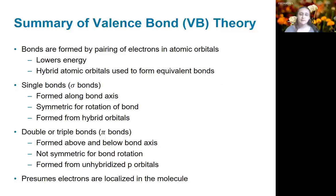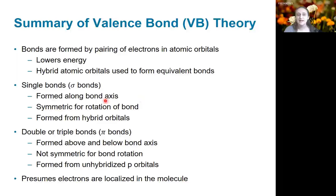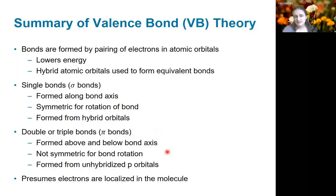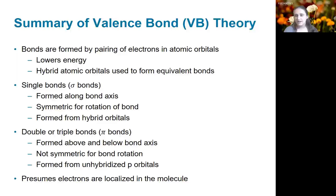To summarize: bonds are formed by the pairing of electrons in atomic orbitals, forming a molecular orbital at lower energy. We use hybrid atomic orbitals to explain why we get equivalent bonds. We have two different types of bonds: sigma bonds, which are single bonds that form along the bonding axis, can rotate freely, and are generally formed using hybrid orbitals; and pi bonds, which are used for double or triple bond forming, happen above and below the bonding axis, and cannot rotate easily. All of this presumes that the electrons are localized in the molecule. In the next video, we'll talk about a different model of bonding where electrons are not required to be localized in atomic orbitals.